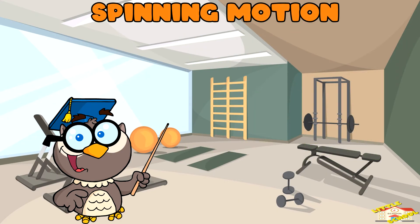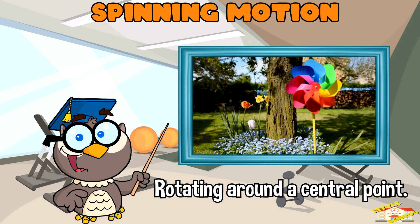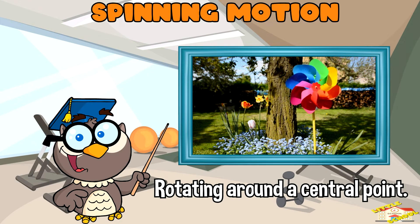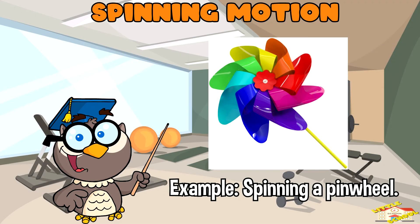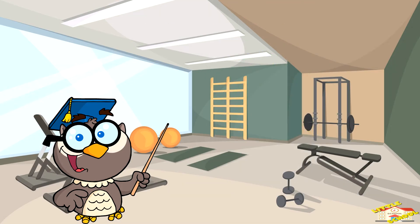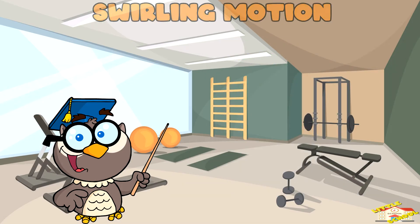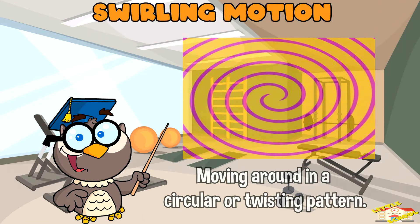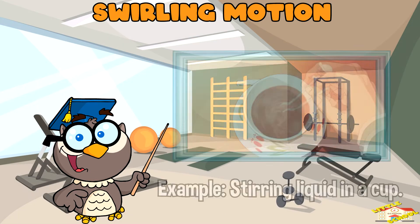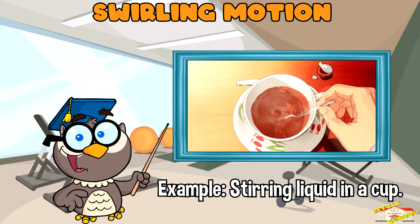Spinning motion. Spinning motion is rotating around a central point. An example is spinning a pinwheel. Swirling motion is moving around in a circular or twisting pattern. An example is stirring liquid in a cup.